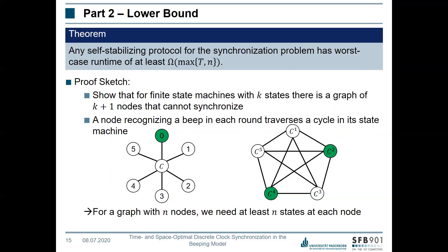As for why T appears in the lower bound: there is a simple argument using a connected graph of two nodes that both already believe they are in sync.